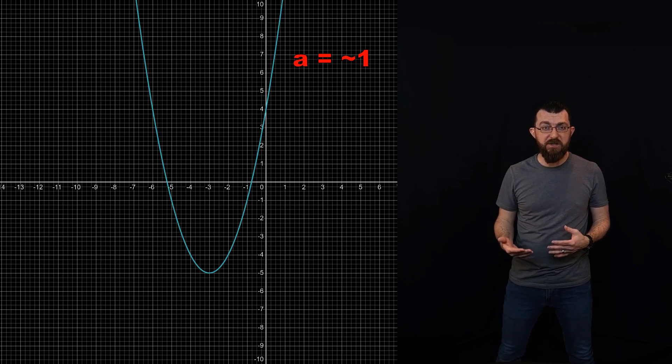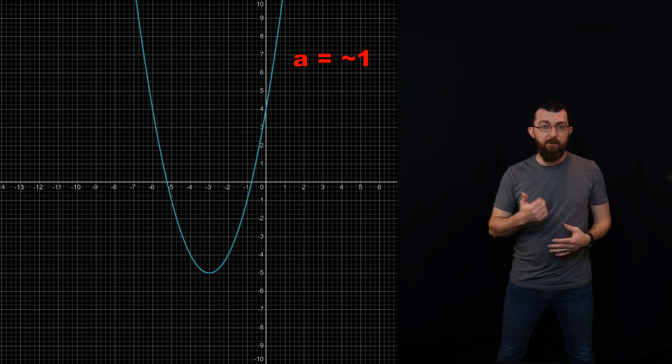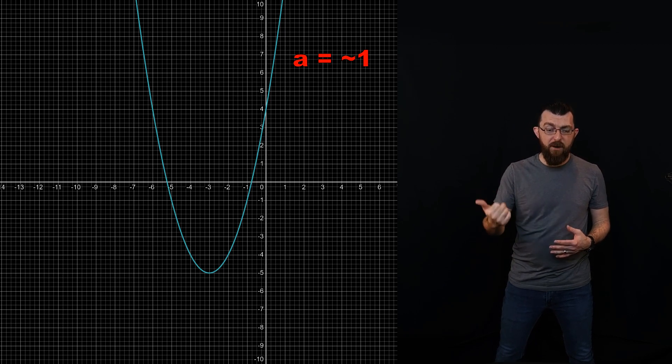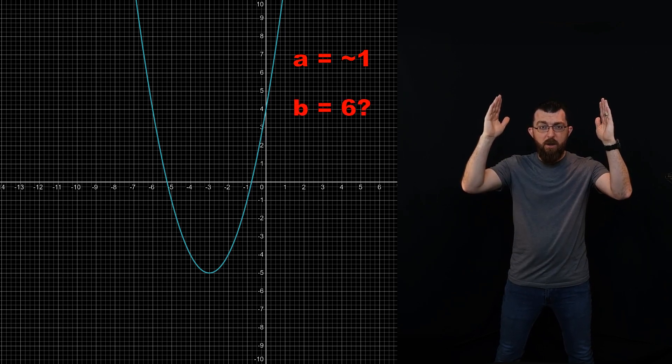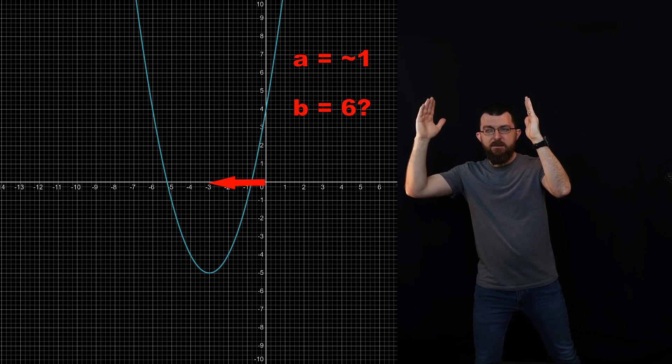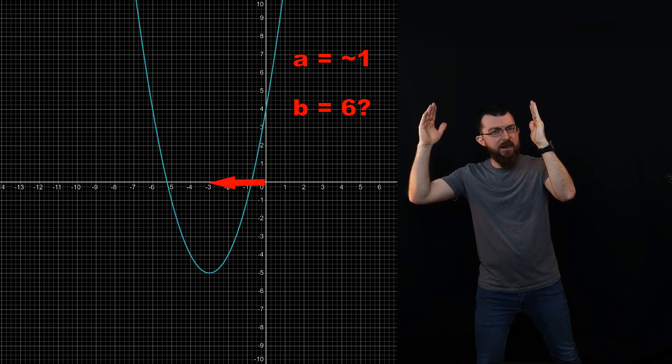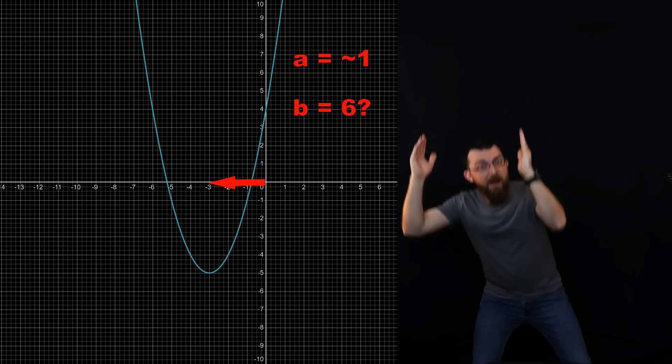The x-coordinate of the vertex is actually negative B over 2A. So it's really easy when A is 1. It's just half the value of B, but in the opposite direction. So if the vertex is 3 in the negative direction, that means that would be the negative half of the value of B. That would be 6. If B is 6, the vertex should go 3 to the left and then down a whole bunch. How much exactly? 3 squared. So down by 9.